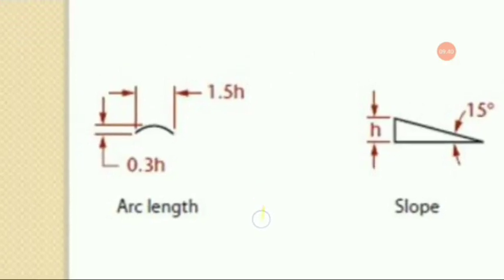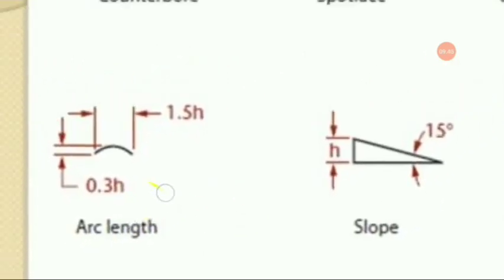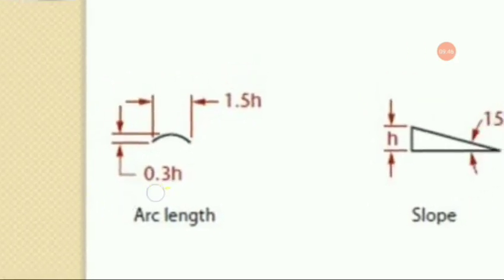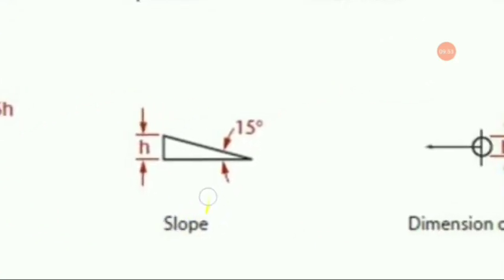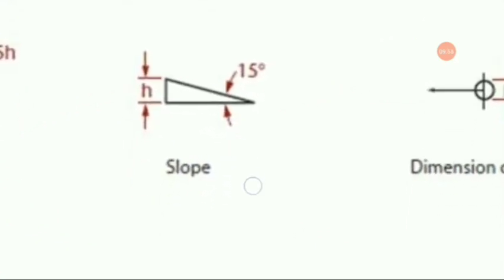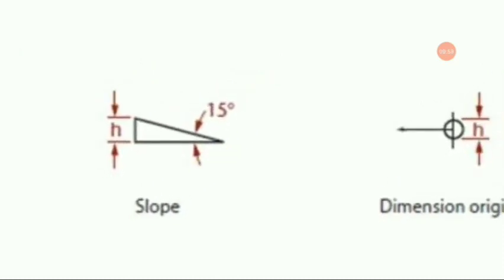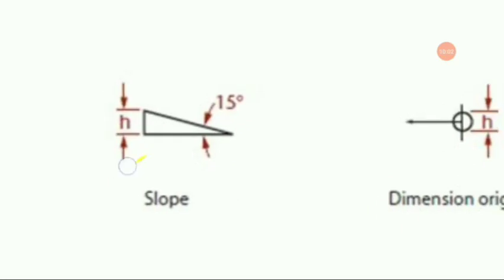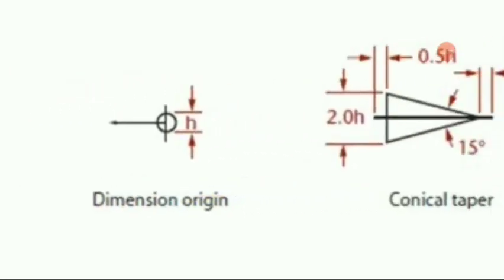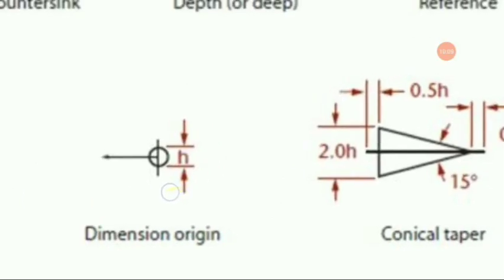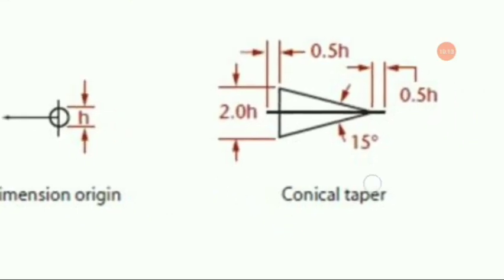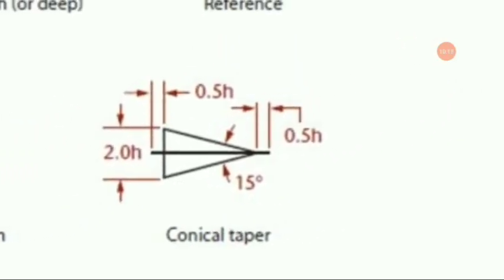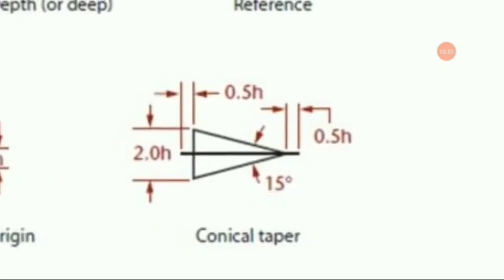Arc length is generally used in welding purposes, and the dimension system is given accordingly. Next is slope — the angular dimension shows 15 degrees as the angle of the slope and H is the height of the slope. Next is the dimension of origin with its symbol and height shown. Conical taper shows different angular and linear dimensions.